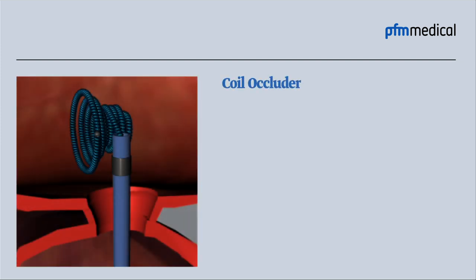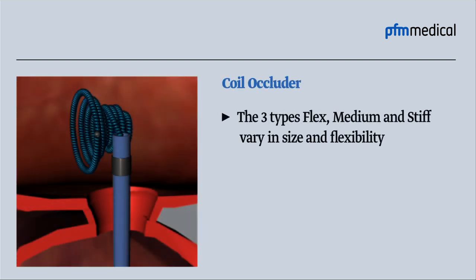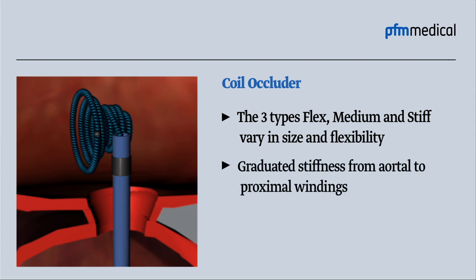Coil occluder. The three types — flex, medium, and stiff — vary in size and flexibility. The device features graduated stiffness from aortal to proximal windings and fits all PDA types.